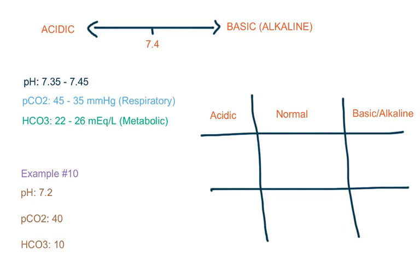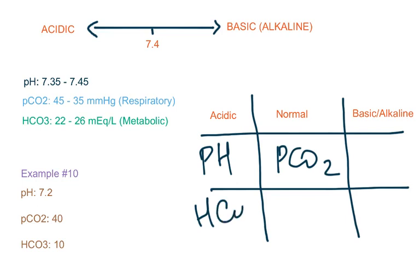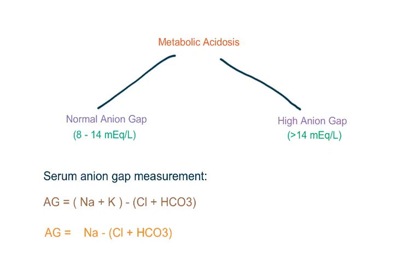Finally, in the last example, pH is 7.2 — acidic. pCO2 is normal. Bicarb is 10 — acidic. So this is metabolic acidosis. Remember that metabolic acidosis is divided into normal anion gap and high anion gap. It is important to know these types because the causes differ. Anion gap is measured by sodium plus potassium minus chloride plus bicarb. In some countries such as the United States, potassium is not included in the formula.